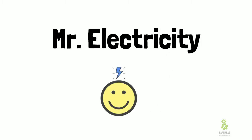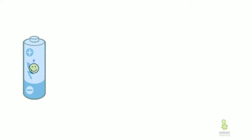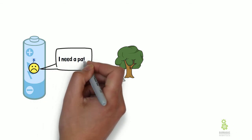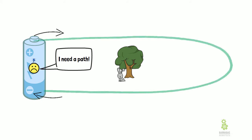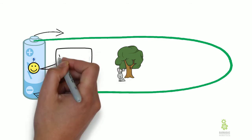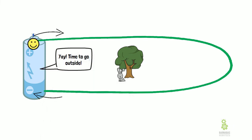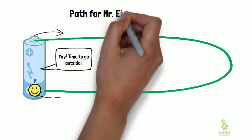I want to talk about Mr. Electricity - he's a friend of mine and he lives inside a battery, because batteries store electricity. He likes to go out to play, but he needs a path. Mr. Electricity won't go out without a path, and the path has to go from the plus terminal out and back to the minus. I'll draw that path in green here - you can see it goes from plus to minus. Mr. Electricity gets happy, goes out, and follows the path all the way around from plus back to minus, making a closed loop.